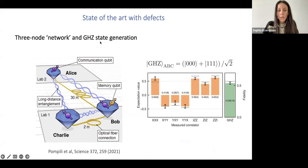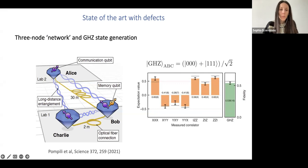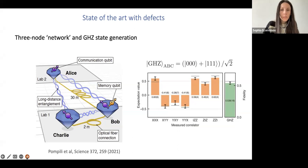Some of these things have already been done experimentally. Pioneering experiments were done by the Delft group — this came out a few years ago — where they showed three-qubit entanglement, specifically creating a GHZ state between two NV centers and a nuclear spin activated through an NV center, all across three different diamond samples. They measured various quantities to demonstrate genuine three-way entanglement.